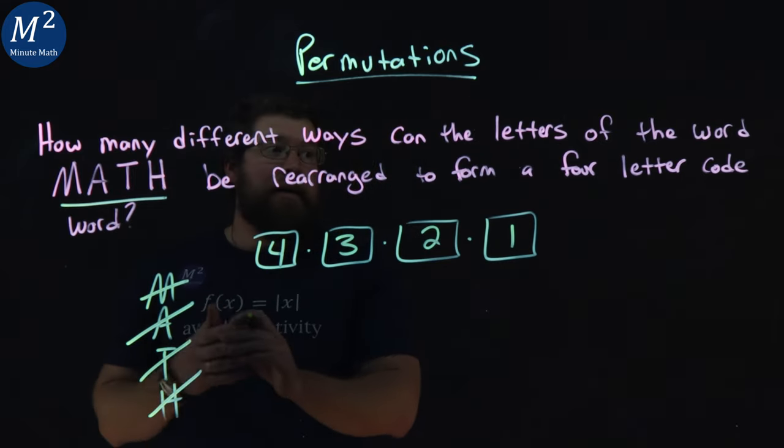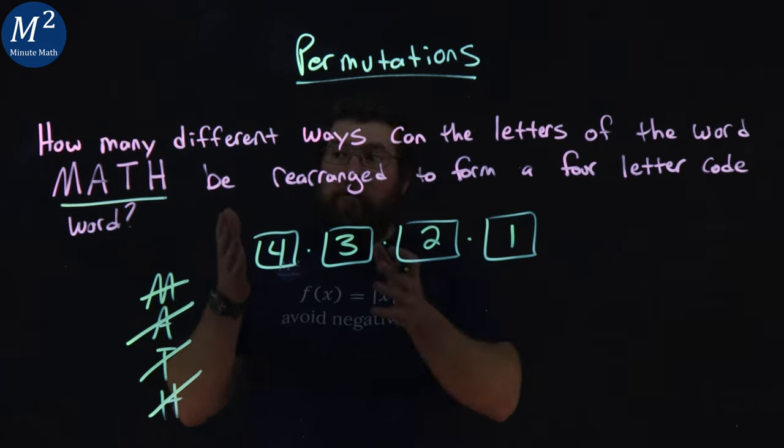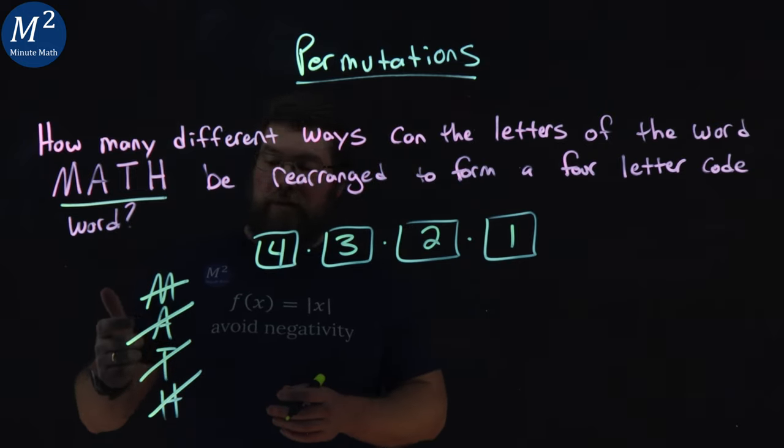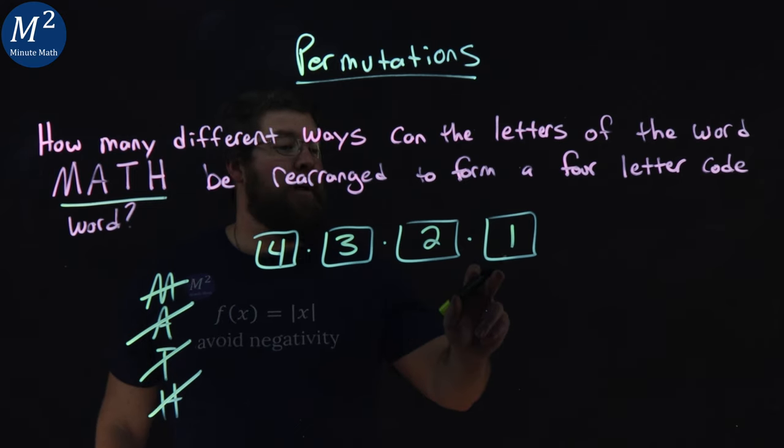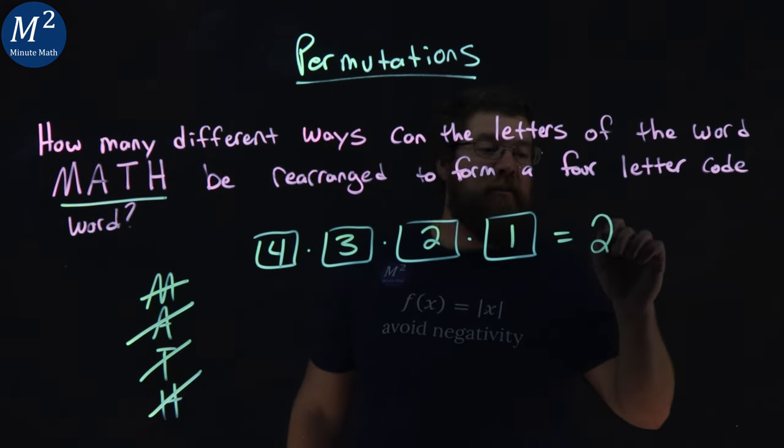To figure out how many different rearrangements of the four-letter word MATH, since each letter is different, we have 4 × 3 × 2 × 1, which comes out to be 24.